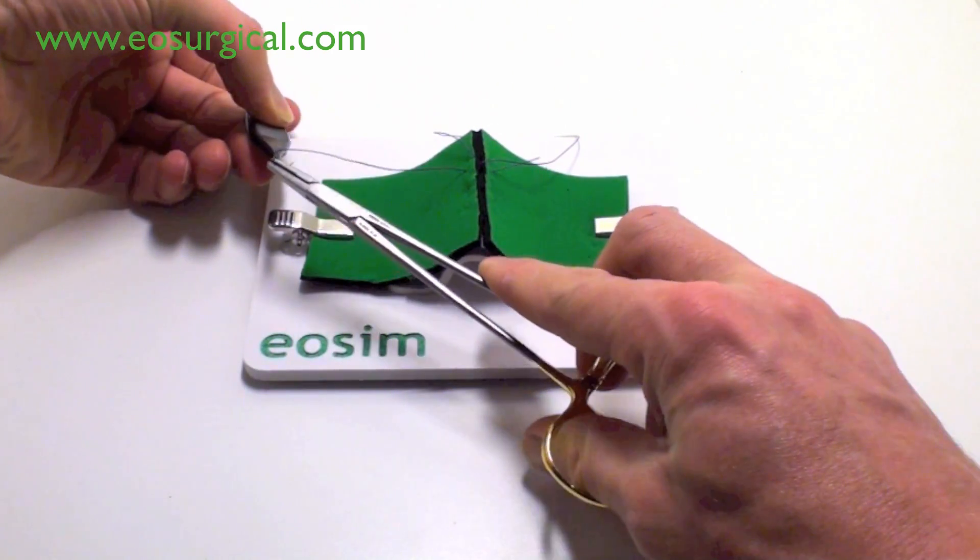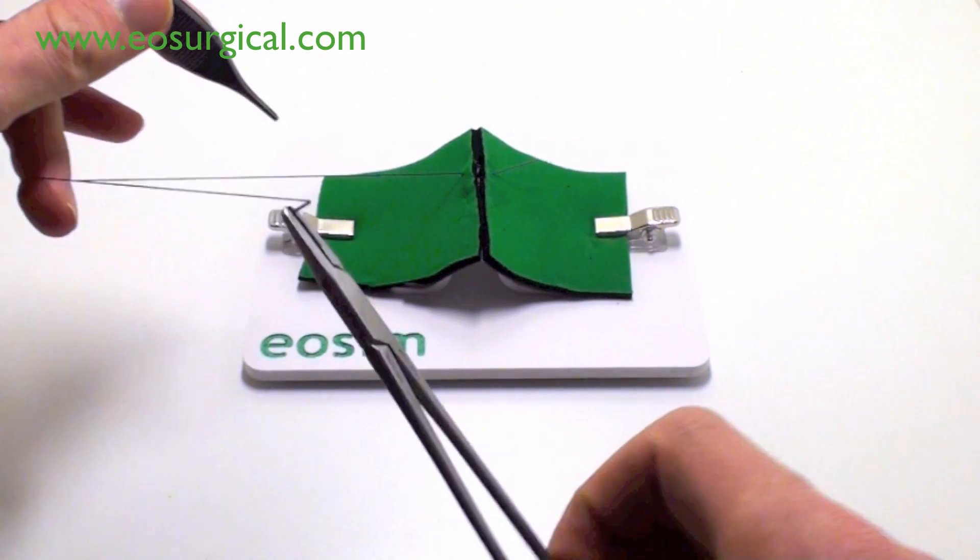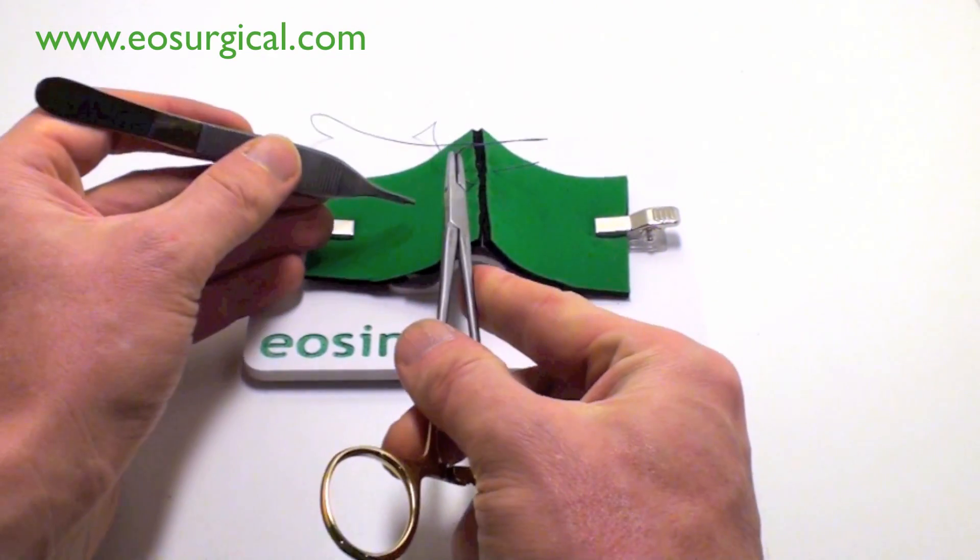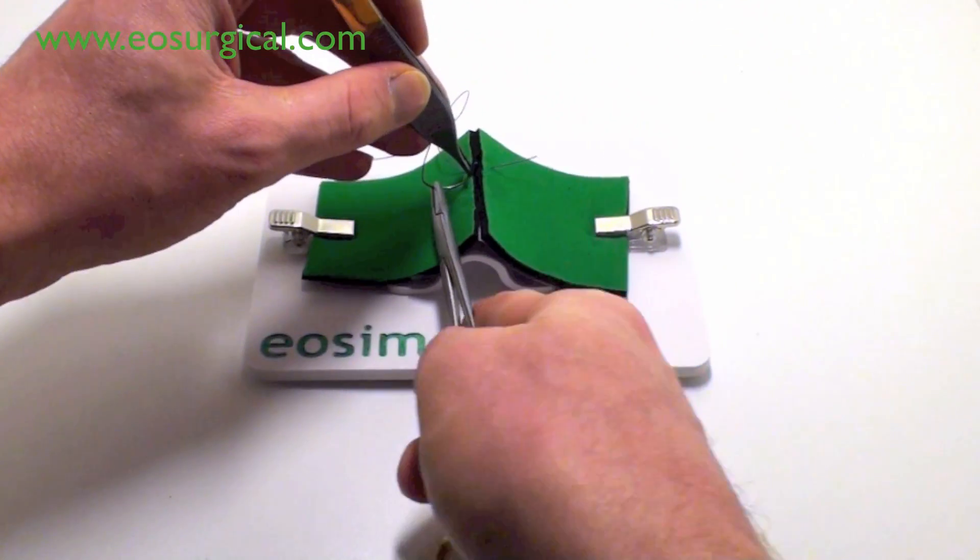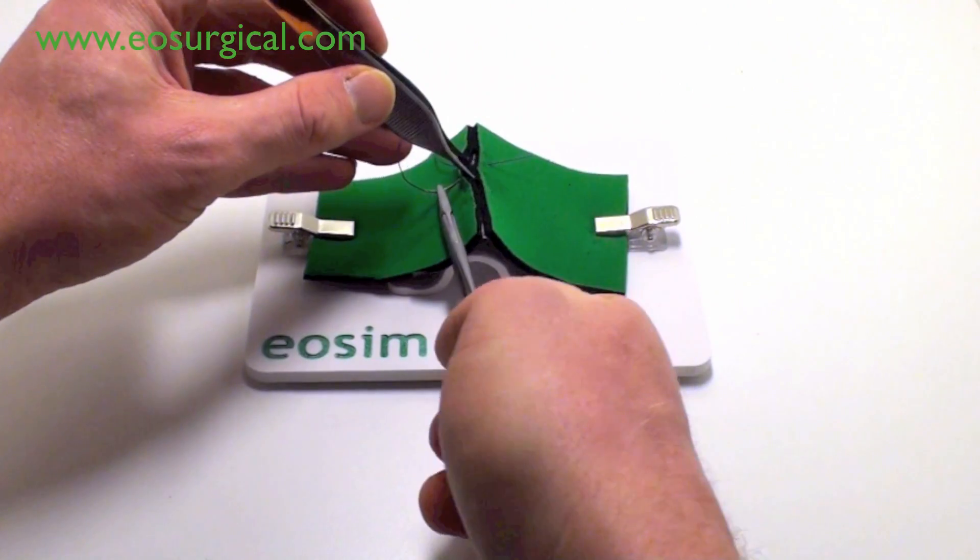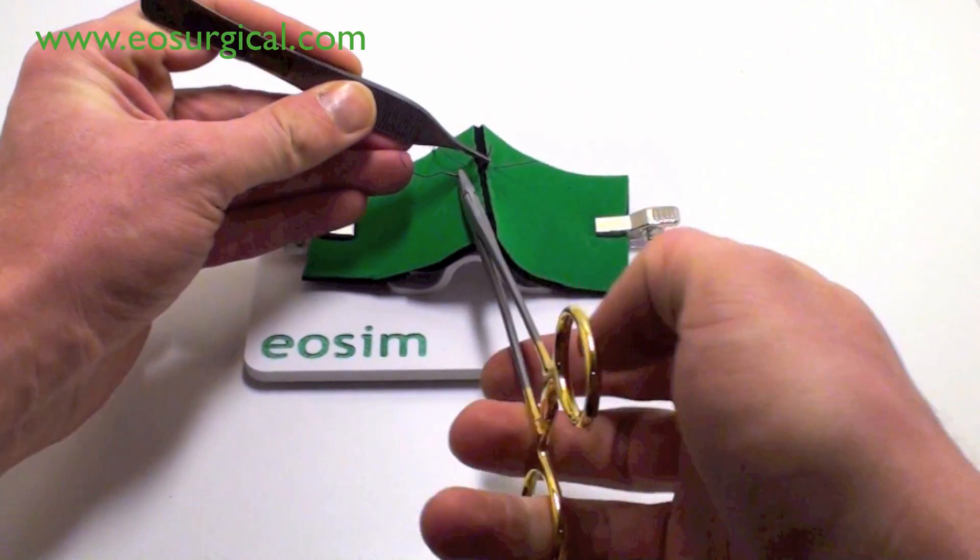There's almost a full pronation to supination of the hand. And again, that's a maneuver to reverse needle. It goes past back through the tissues.